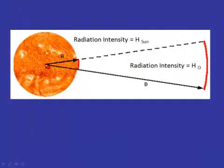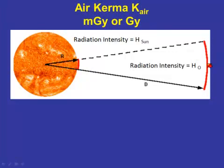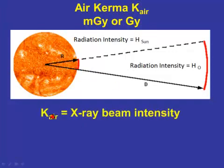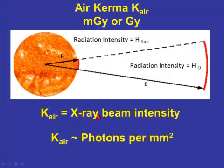If we take a source of radiation — here I'm showing you the sun — at a certain point we can have an intensity, a strength. When it comes to ionizing radiation in interventional radiology, the intensity is measured in terms of a milligray, or because the amount of radiation we use is quite a lot, in terms of gray. So the air kerma is the X-ray beam intensity. You can think of it, in a simplistic way, as the number of photons per square millimetre.